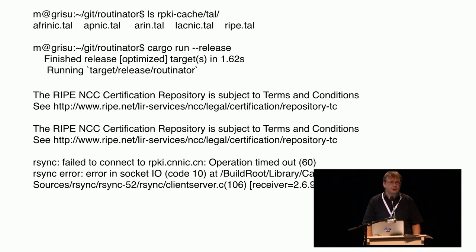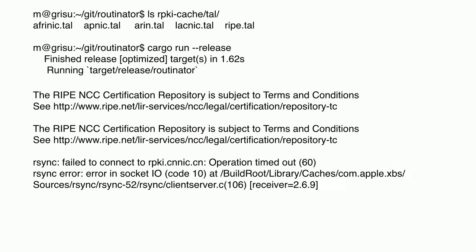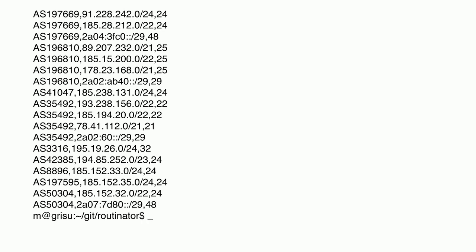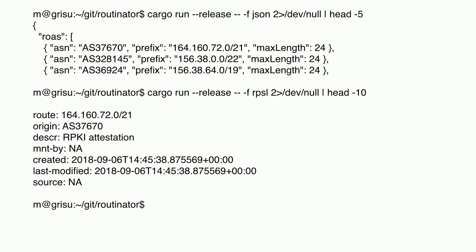Once it runs, it goes off and does the rsync thing. You're going to see the terms and conditions for a certain RIR twice, for some reason. You'll also see that it complains about not being able to get behind the Great Firewall — that's just how it is right now. Eventually it will start grinding the wheels and give you a list of AS numbers, prefixes, and the mythical max-length thing. This format is modeled pretty much after what the RIPE NCC validator outputs. The only thing missing is the trust anchor it came from, which we didn't think was all that useful. It can also do the other two things the RIPE NCC validator does: JSON and RPSL. There are way too many acronyms starting with R in this thing.